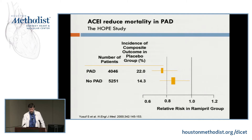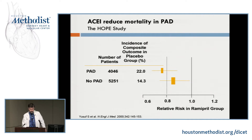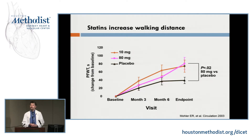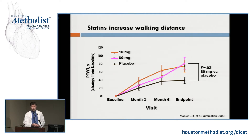ACE inhibitors reduce mortality in peripheral arterial disease. Most of the work in PAD are sub-studies of large coronary trials, but in the HOPE study, patients with PAD benefited from ACE inhibitors to the same degree as everyone else. The same story applies to statins — they reduce the risk of major adverse cardiovascular events in patients with PAD, as shown by data from the Heart Protection Study. Statins also increase walking distance — they're actually better than Trental in improving walking distance.